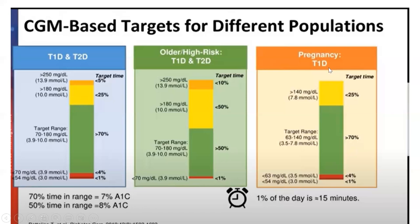For pregnancy with Type 1 diabetes, the target range should be achieved more than 70% of the time. Above 140 mg/dL should be less than 25%, below 63 mg/dL less than 4%, and below 54 mg/dL less than 1%. The reason 70% is specifically used is that 70% time in range is approximately equal to 7% HbA1c, and 50% time in range is approximately equal to 8% HbA1c. This is how the percentage concept has been derived to correspond to HbA1c levels.